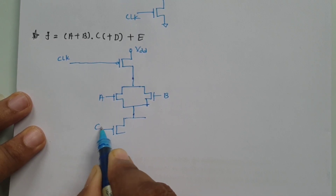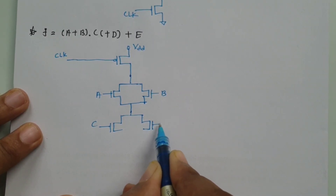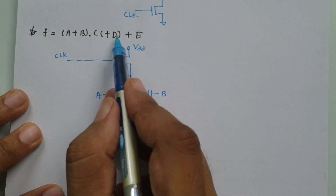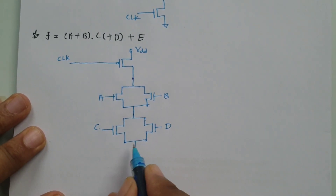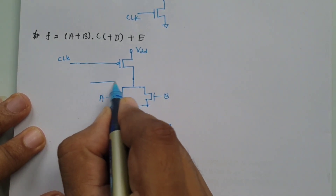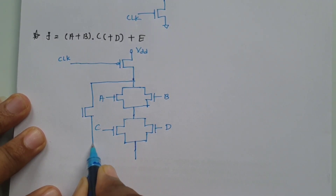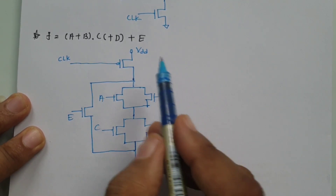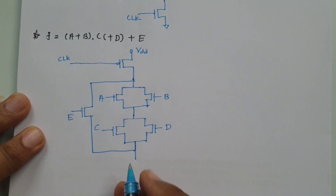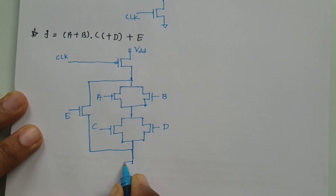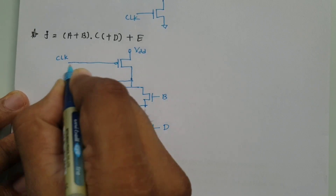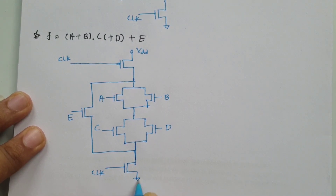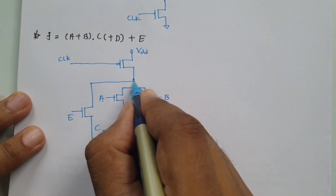So here we have 'c' and 'd' NMOS in parallel. Then a plus operation means parallel connection, so the entire (a+b)·(c+d) structure is connected in parallel with 'e'. This is how the complete pull-down network is formed. After that we connect the gated clock NMOS, then ground, and we take the output from this terminal.